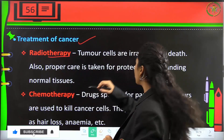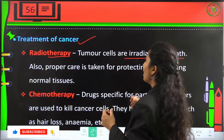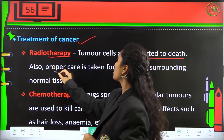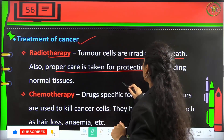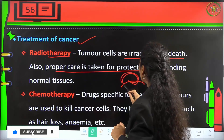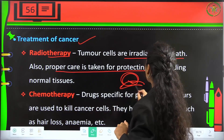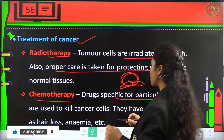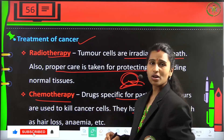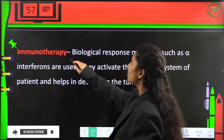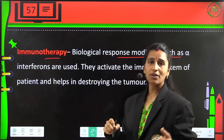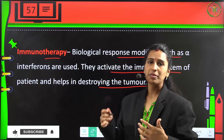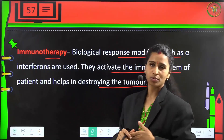Treatment for cancer includes radiotherapy, where tumour cells are irradiated to death using high-frequency radiation, with care taken to protect surrounding normal tissue. Chemotherapy uses drugs specific to particular tumours to kill cancer cells, with side effects like hair loss and anemia. Immunotherapy uses biological response modifiers such as alpha interferons to activate the patient's immune system to destroy the tumour — this is where the body's immunity is artificially built up.